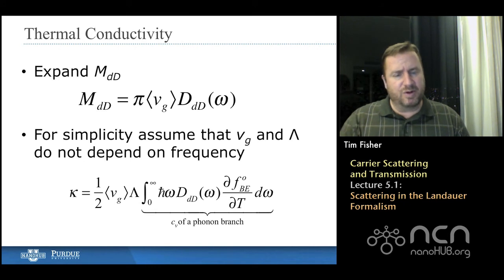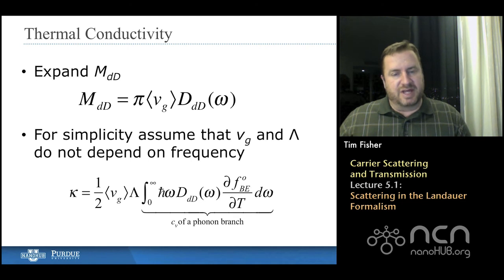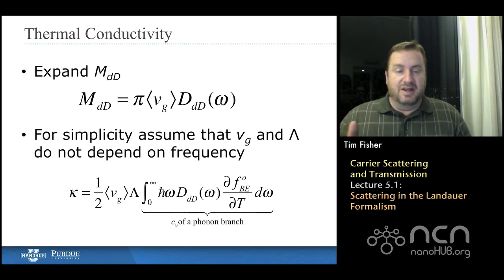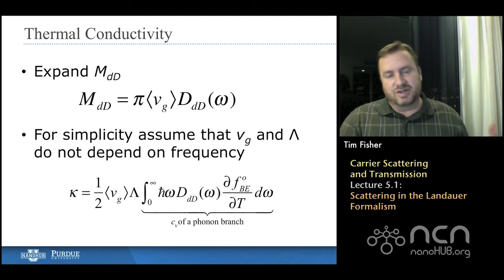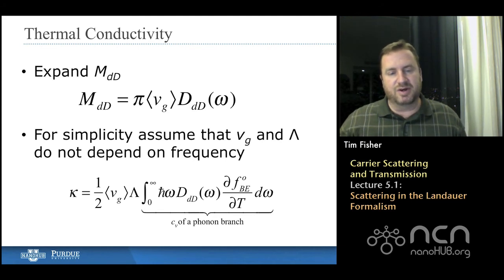When we pull out these factors, that's the average group velocity and the mean free path or scattering length, capital lambda, we find that, really, that thermal conductivity turns into the product of three main terms.